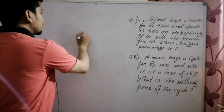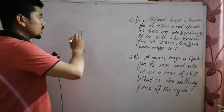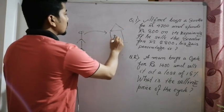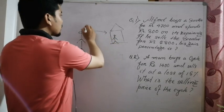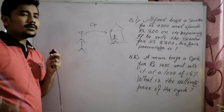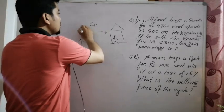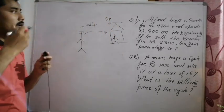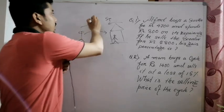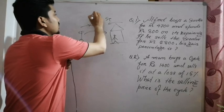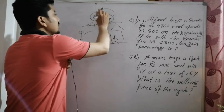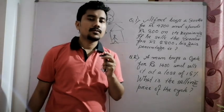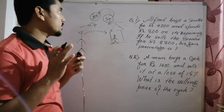We need to understand that when you go to buy something from a shop, the price you pay to buy it is the cost price. And when you look at the price at which you sell that item, that is called the selling price. Cost price and selling price are the main terms in profit and loss.